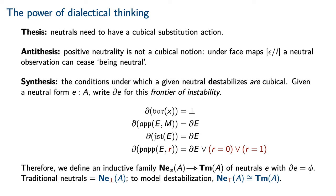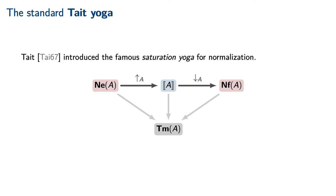To model destabilization, we ensure that the projection map from everywhere unstable neutrals to equivalence classes of type terms is an isomorphism. Classically, neutral and normal forms are integrated into a Tait computability model for normalization by means of Tait's famous saturation yoga.